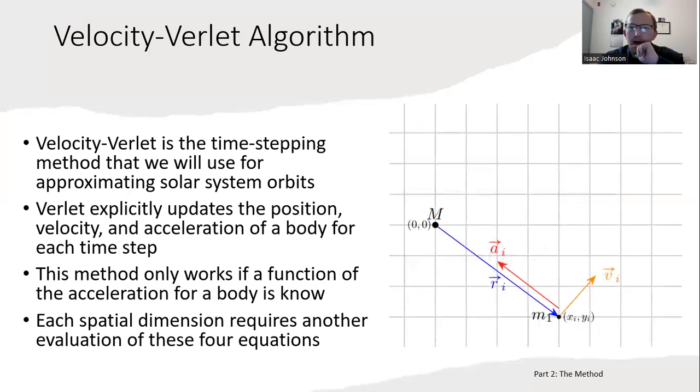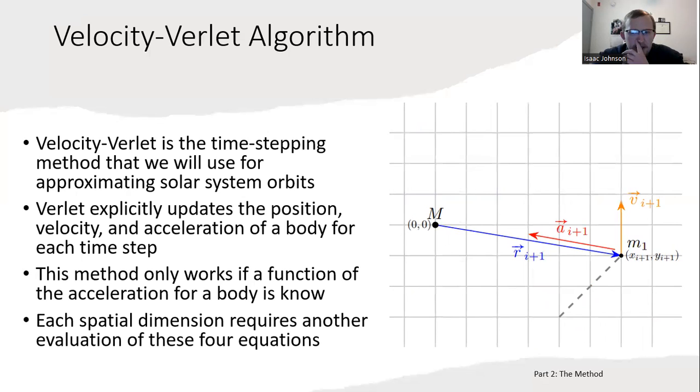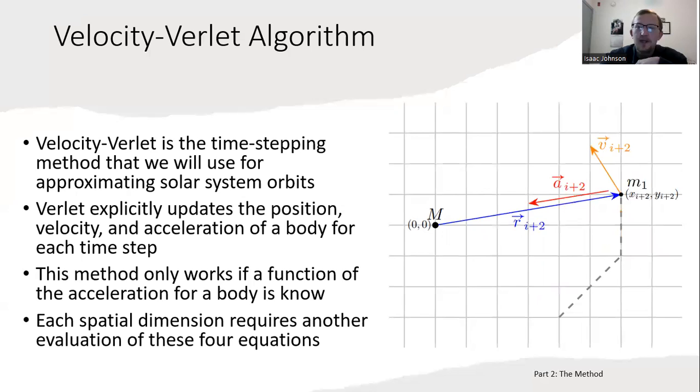Here's an animation of what's going on. At some point in time, the ith time step, we know the acceleration, the velocity, and the radius vector or position vector of the planet. Then we can use that information to take a linear step forward—a linear approximation—and update all the quantities: updated velocity, updated acceleration, updated position.